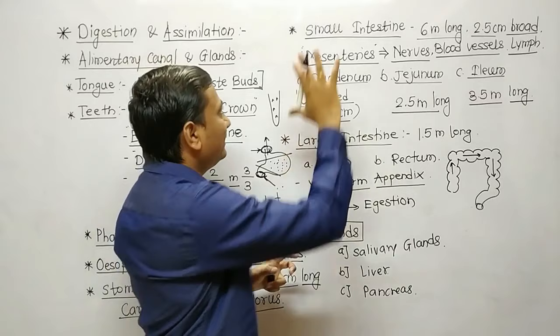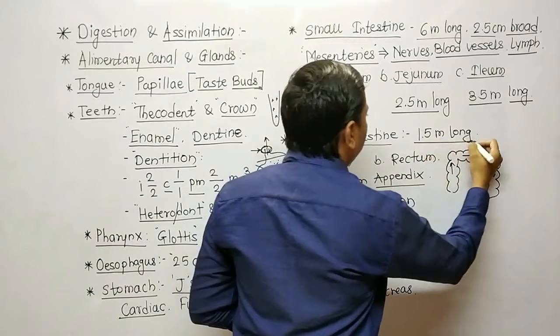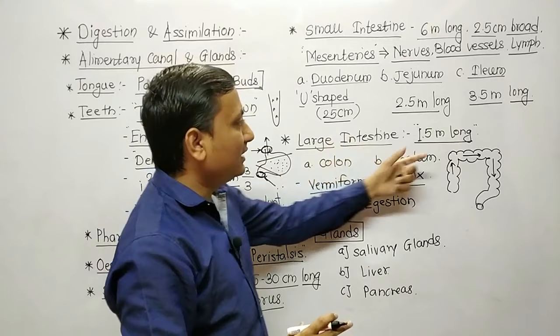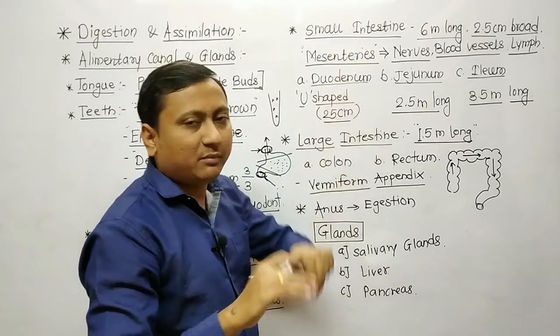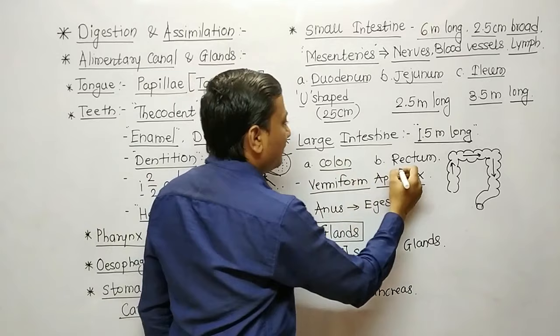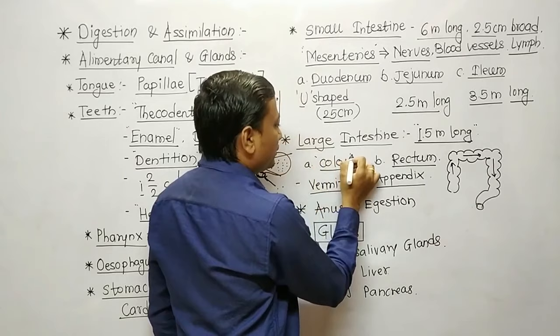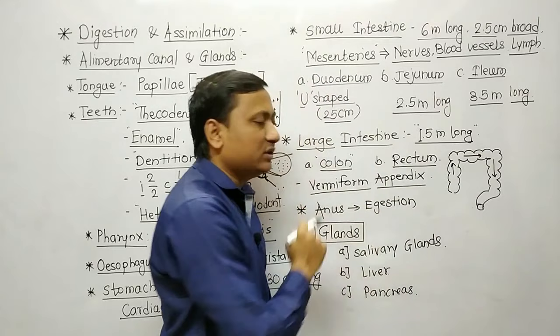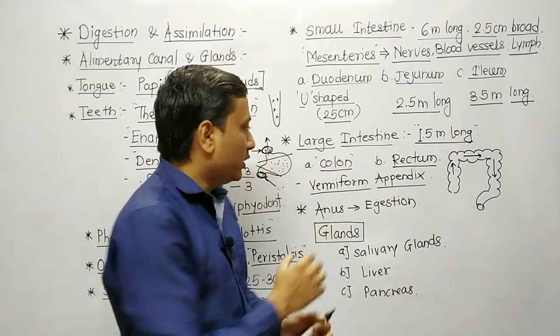The next structure is the large intestine. It is 1.5 meters in length, but has a larger diameter compared to the small intestine. The large intestine is divided into two parts: colon and rectum. The colon is divided into three parts: ascending colon, transverse colon, and descending colon. The main role of the colon is absorption of water from undigested food, and the remaining material becomes fecal matter.